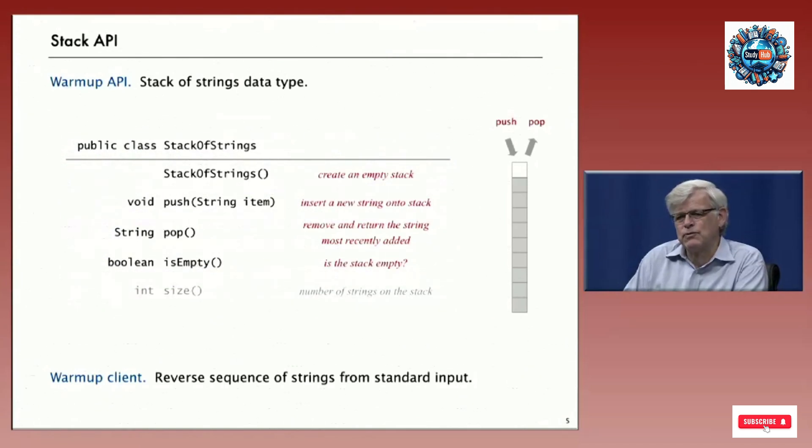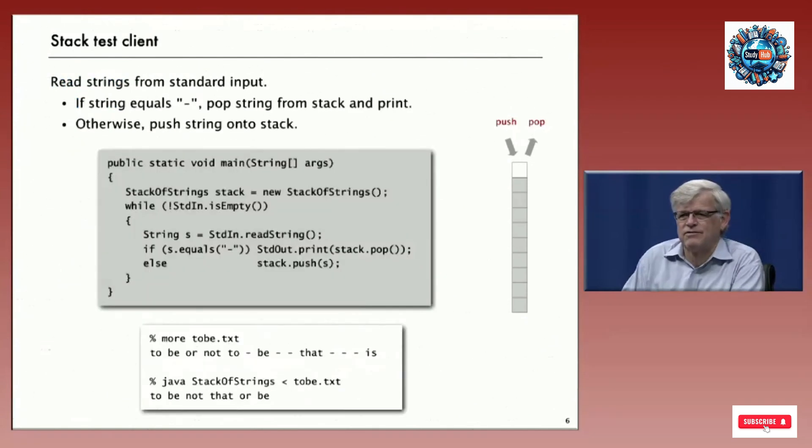As always, we'll first write a client and then look at implementations. Our simple client is to take some strings on standard input and some pop commands indicated with hyphens. This client reads strings from standard input. If the string equals the hyphen character, it'll pop the string at the top of the stack and print it. Otherwise, if it's a string that's not equal to the hyphen character, it'll just push it onto the stack.